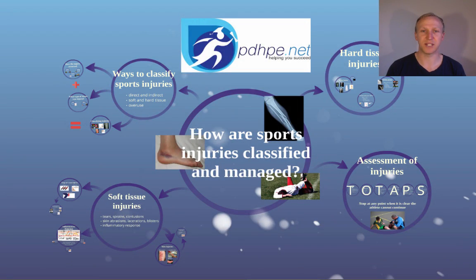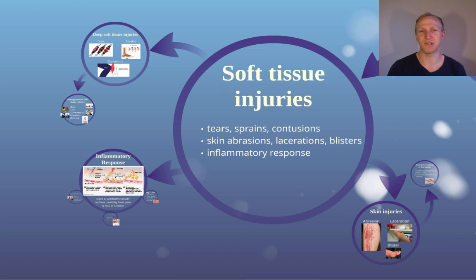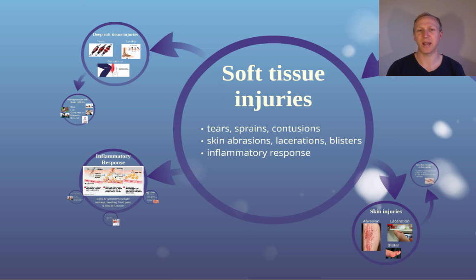The next topic for how a sports injury is classified and managed is soft tissue injuries. There are several examples: tears, sprains, and contusions are mostly deep soft tissue injuries occurring underneath the skin, primarily to muscle. Then there are surface injuries — skin injuries — including abrasions, lacerations, and blisters. The inflammatory response is essentially the way your body responds to any form of soft tissue injury.